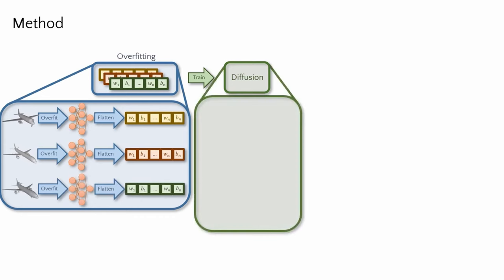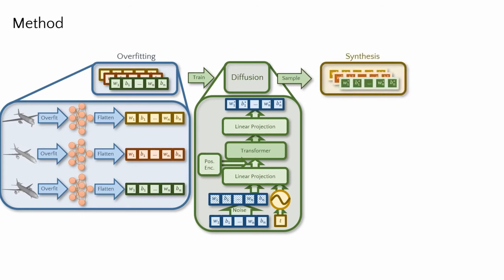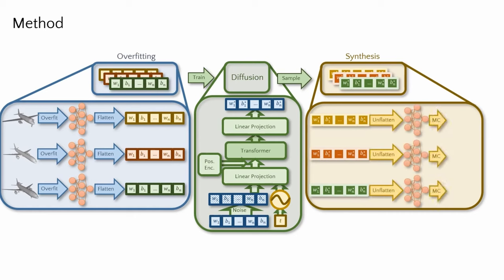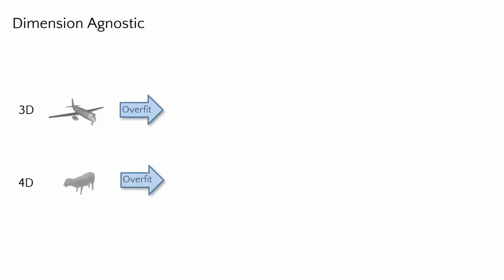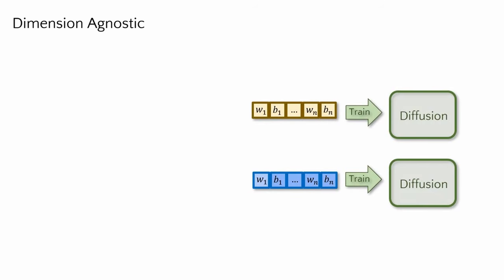To train the diffusion process for neural fields, we first overfit MLP parameters to each training sample in a dataset. We then model a diffusion process on the set of optimized MLP parameters. We add noise to them and train to predict the denoising process using a transformer-based diffusion architecture. We can then synthesize new neural fields as their MLP parameters, sampling weight vectors from our diffusion model, unflattening them to MLPs and decoding them as surfaces.